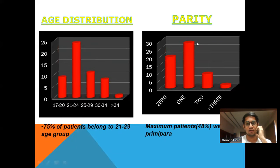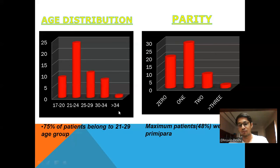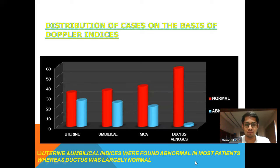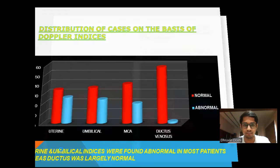My observations: on age distribution and parity, 75% of patients belonged to the 21 to 29 age group, and maximum patients — 48% — were primigravida. On distribution of cases based on Doppler indices, the uterine and umbilical indices were found to be abnormal in most patients, whereas ductal stenosis was largely normal.